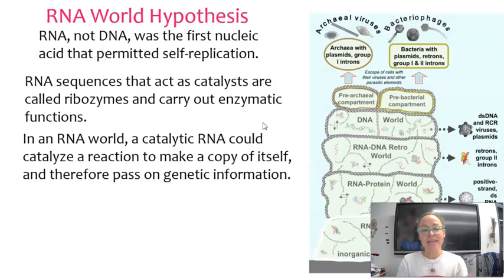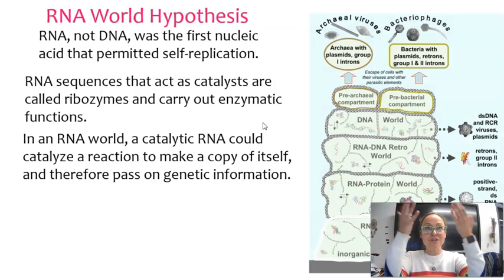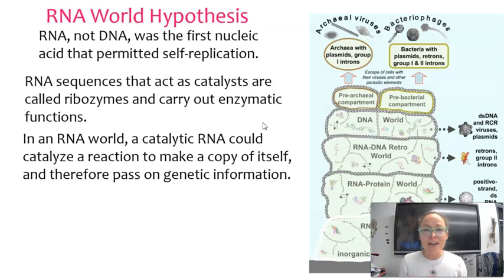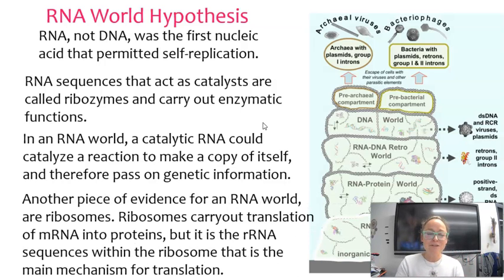In an RNA world, a catalytic RNA could actually catalyze a reaction to make a copy of itself and therefore pass on genetic information. When we think about this, when cells are dividing, here we have a possible method for genetic information to pass from one generation to the next. If RNA is catalytic and it can self-replicate, that makes sense that it would then be the genetic material to pass on RNA sequences through generations of cells.